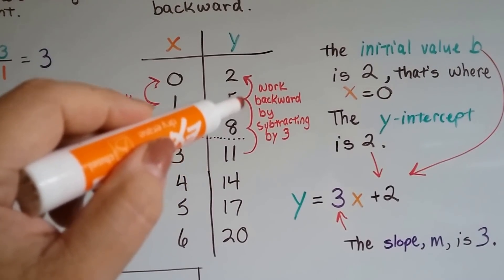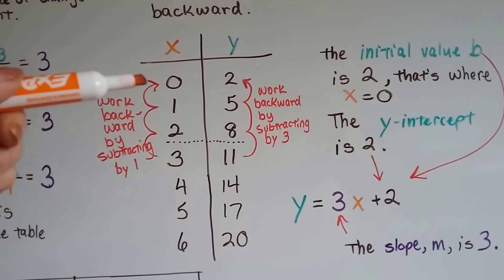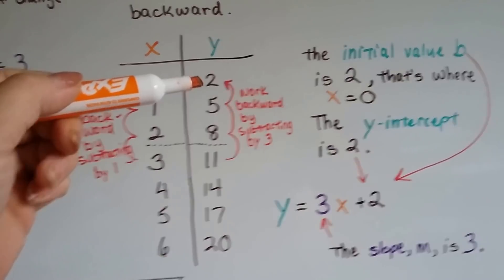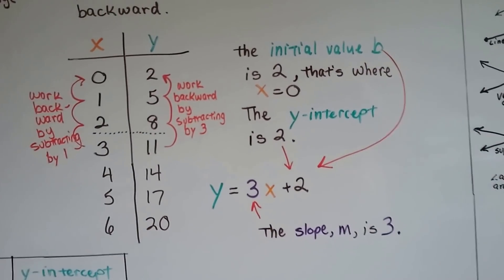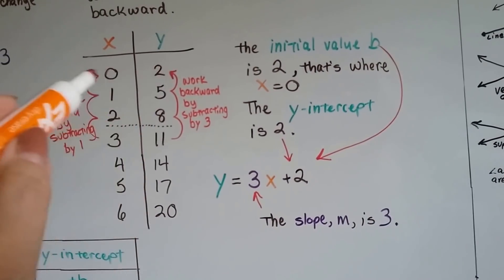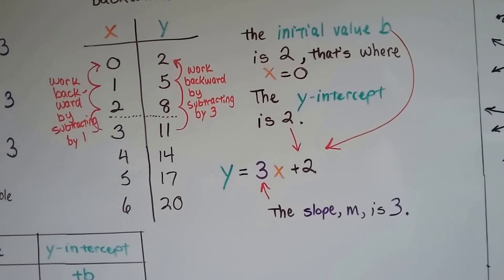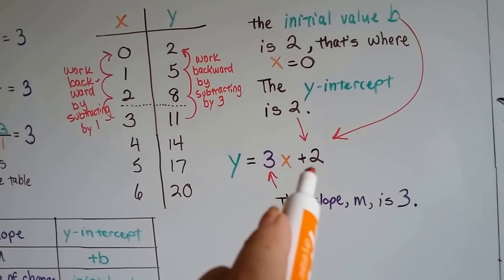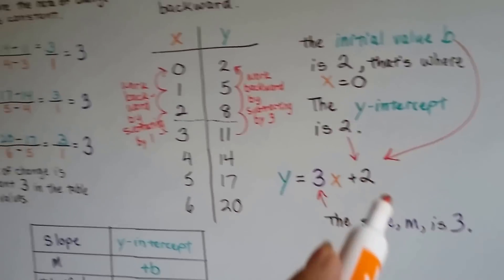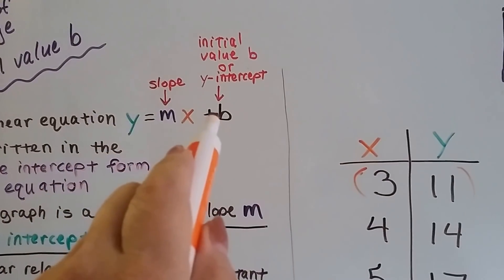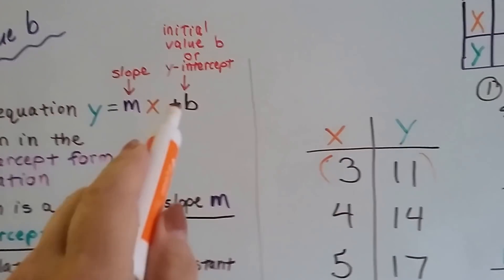And because these were jumping back by 3, I kept jumping back by 3. From 11, I went to 8, then 5, then 2. And now I have my x 0. I know my y-intercept is a 2. The initial value b is a 2. That's where the x equals 0. So that y-intercept is a 2. That's this plus 2. That's that b. We said the initial value b or the y-intercept is that plus b. It's wherever x equals 0.